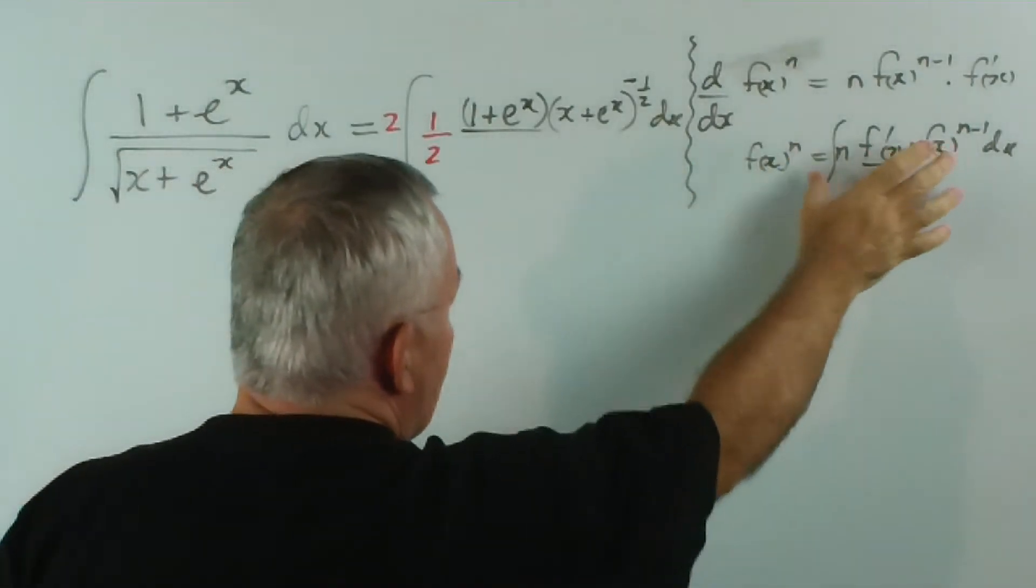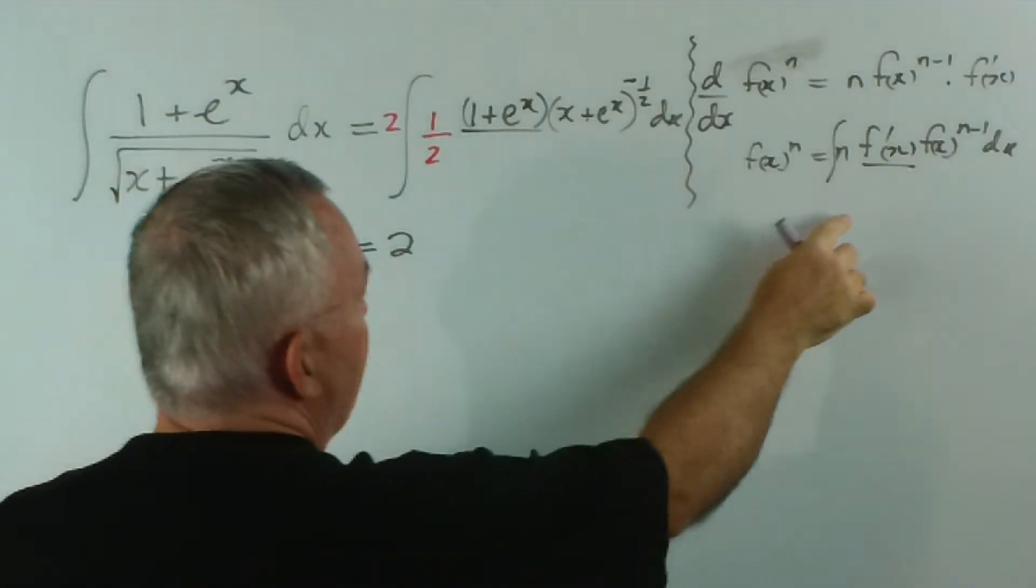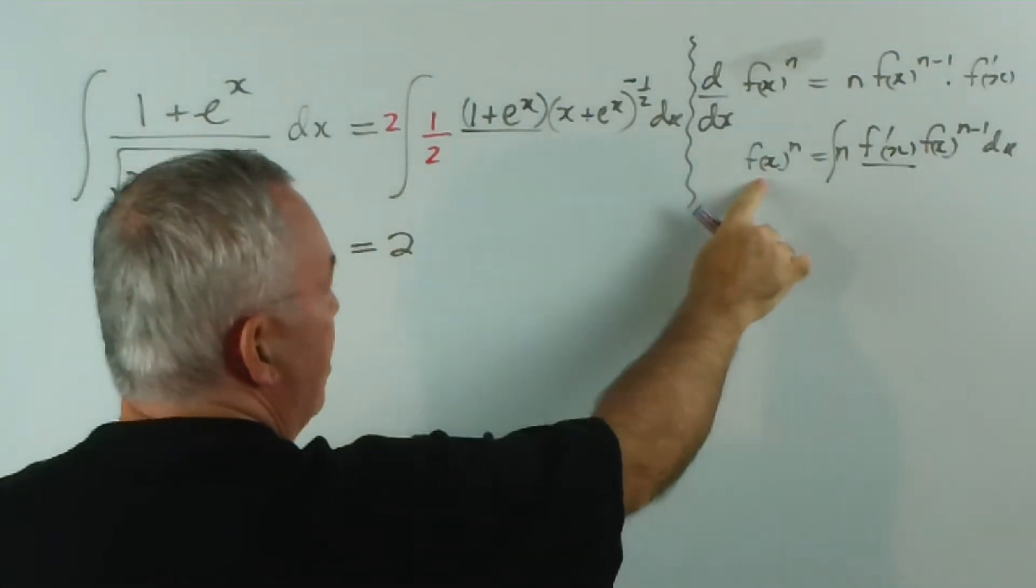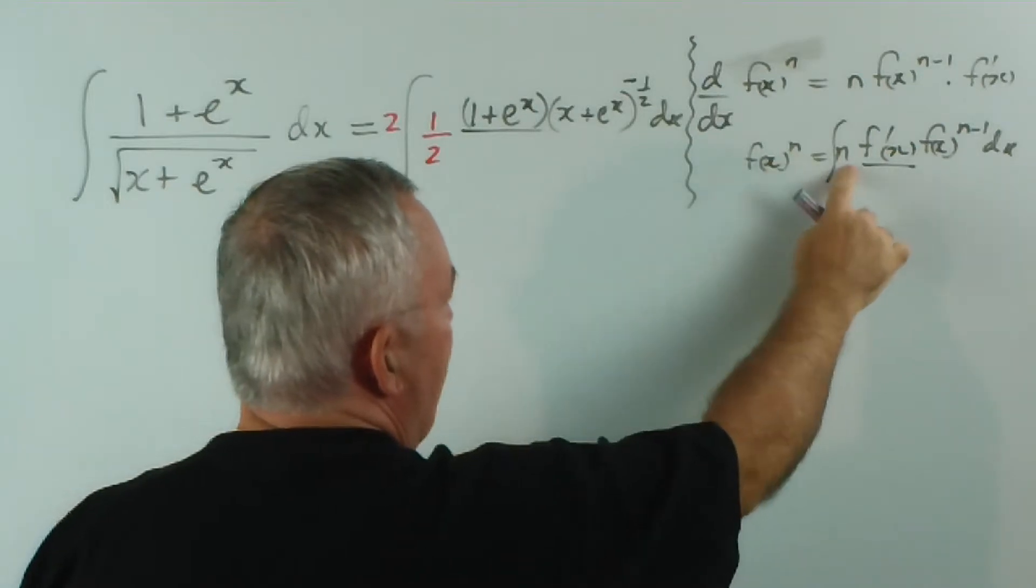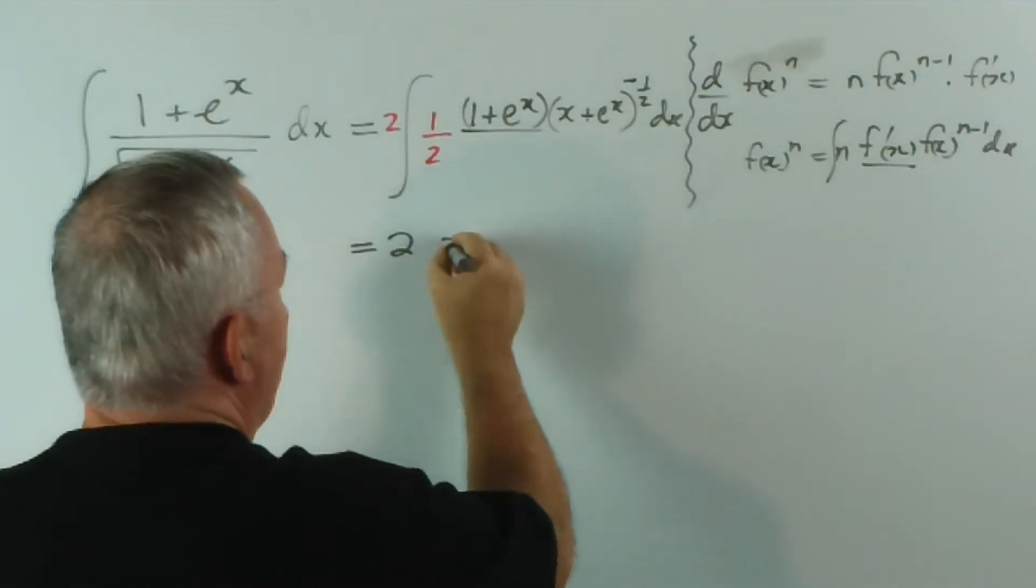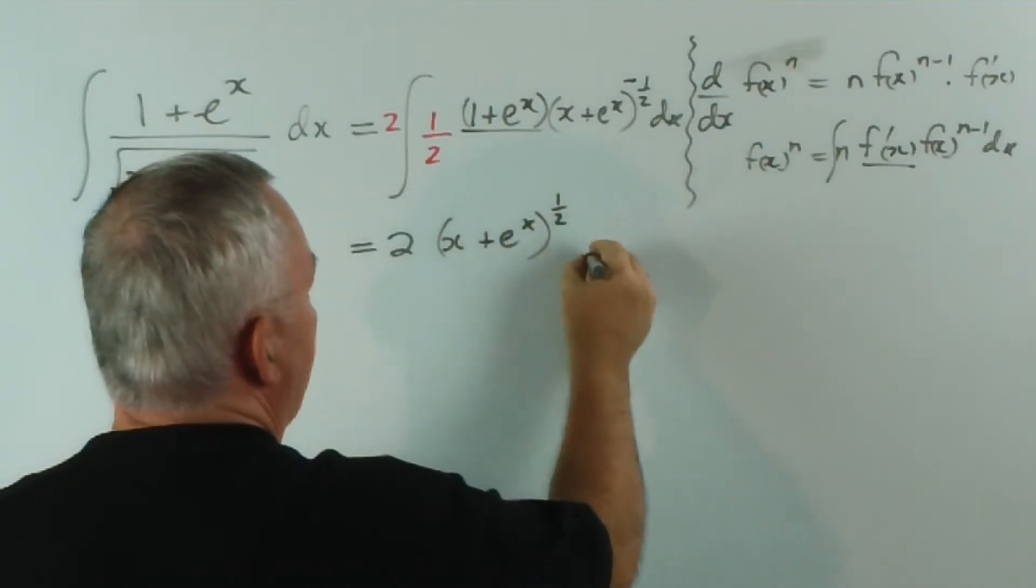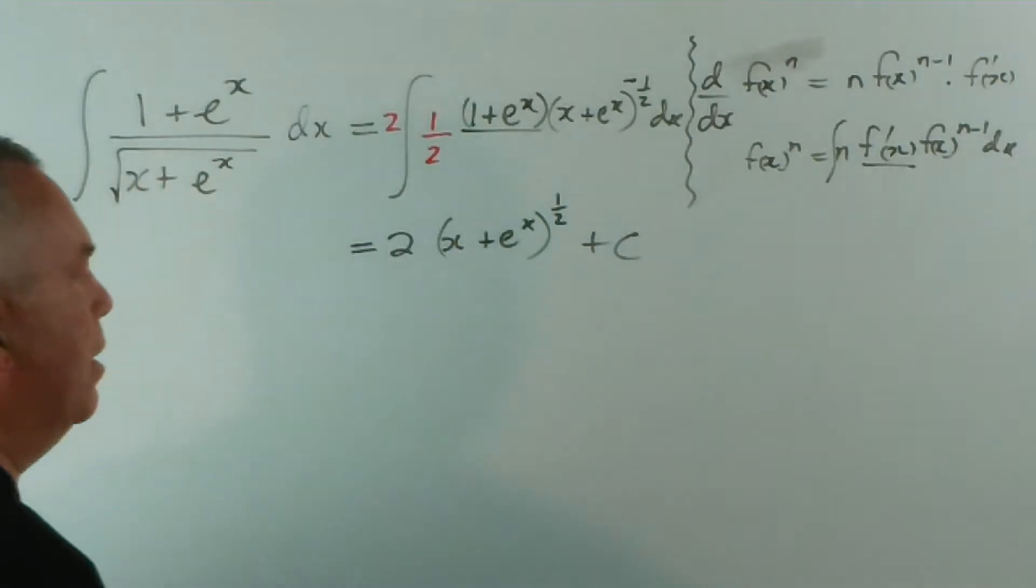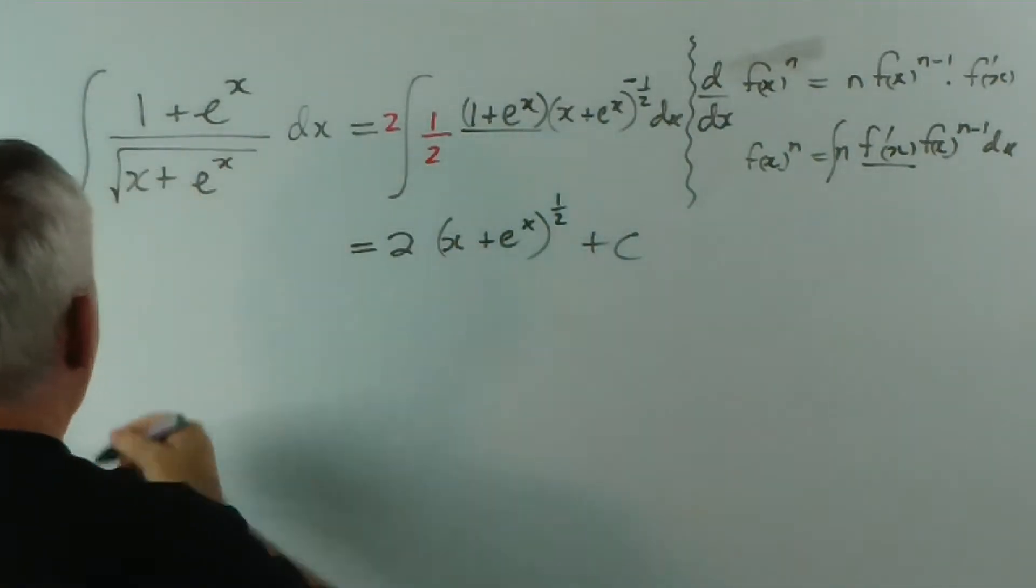That pattern is exactly the pattern we want, so the answer is going to be two times, this is the result of the integral, the function x plus e to the x to the power 1 half plus c. I wasn't going to do that, but that's probably worth showing.